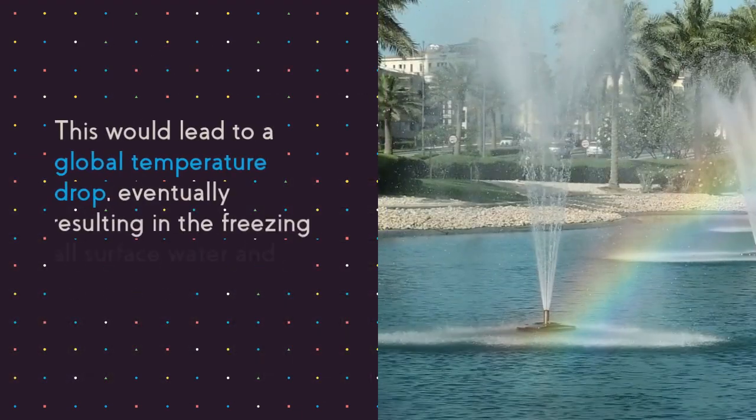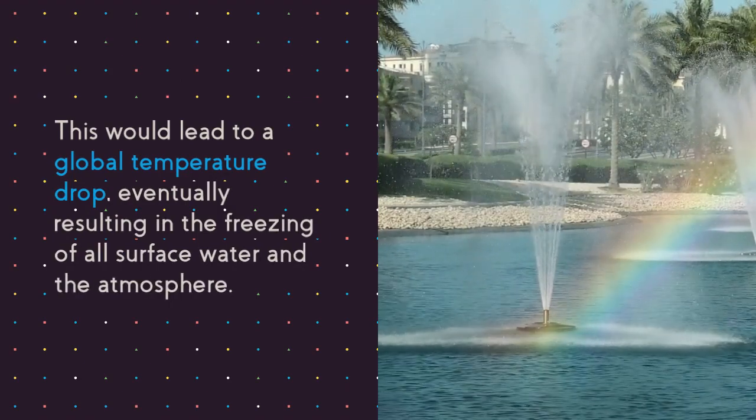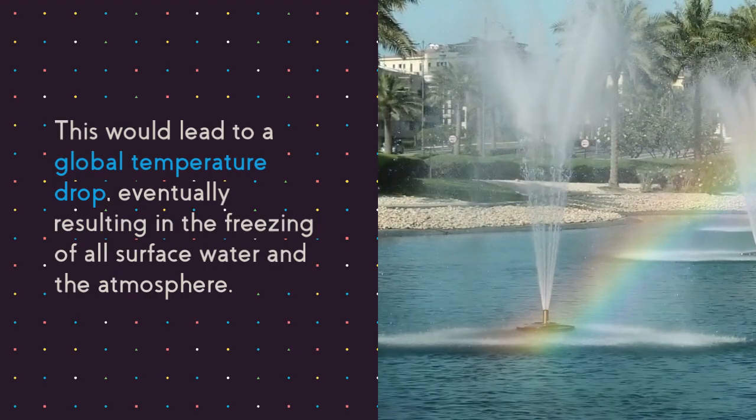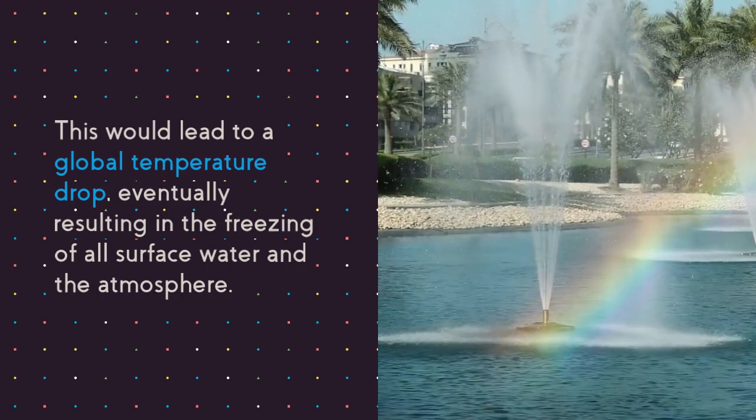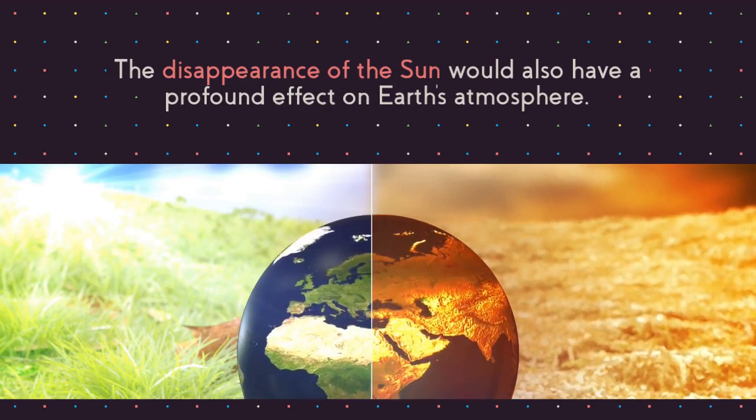Eventually resulting in the freezing of all surface water and the atmosphere. The disappearance of the sun would also have a profound effect on Earth's atmosphere.